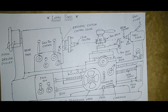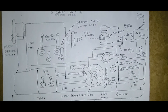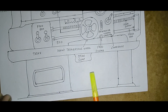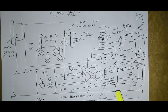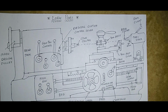Drawing the diagram from memory takes time, so always remember the main parts. The main parts of the lathe are the headstock, tailstock, tool post, feed box, and live center. First draw the body and base of the lathe machine, then add the main driving pulley, headstock, tailstock, tool post, feed box, feed rod, feed engage lever, and carriage. Completing these will definitely get you good marks.